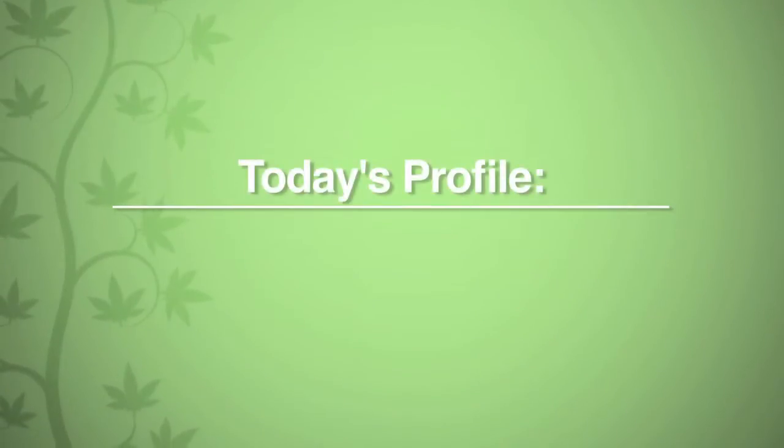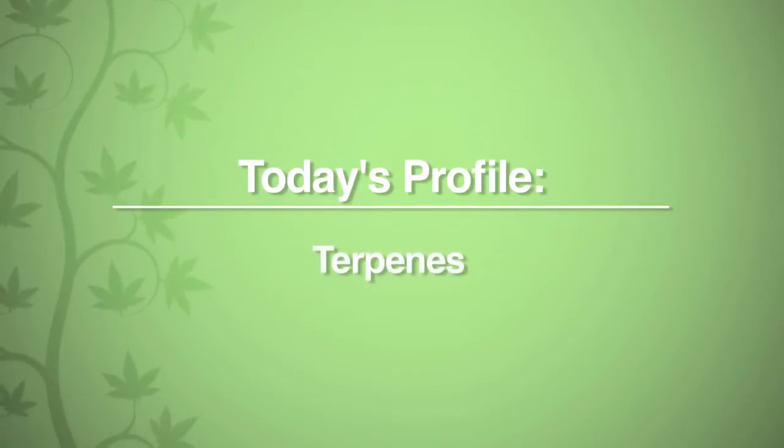Today's cannabinoid profile is on terpenes. Terpenes are the main class of aromatic compounds found in cannabis.